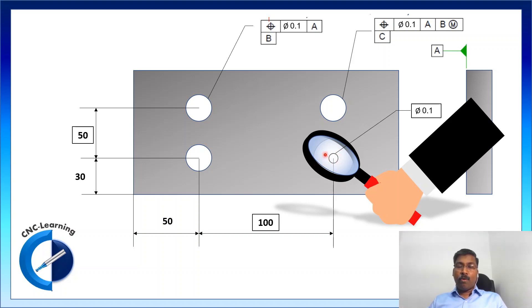If we draw one circle of diameter 0.1 with this true center. So, that is the tolerance zone for this position. It means the center position of this hole can vary within this circle of diameter 0.1.